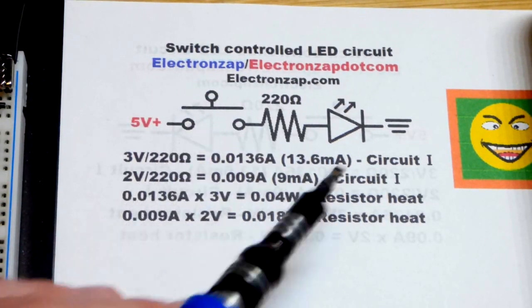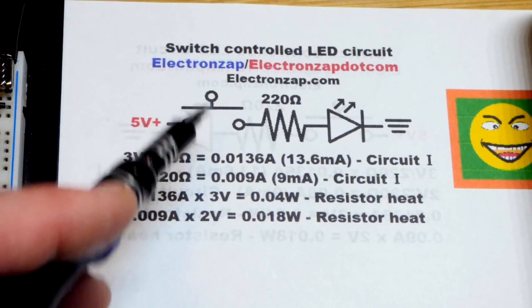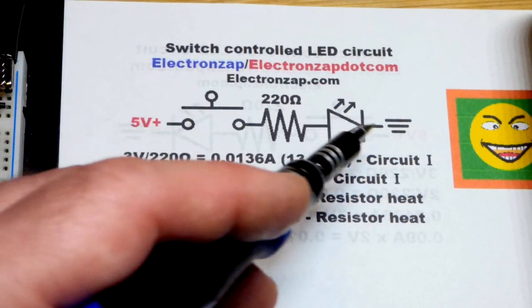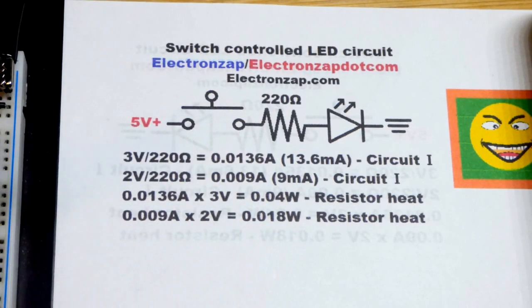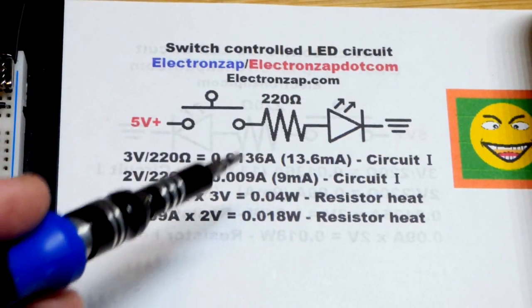This is a push button switch. So the LED will be off. No current will flow. When we close the switch, current will flow through the three components equally.